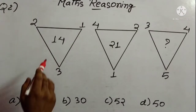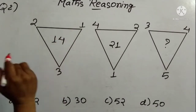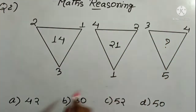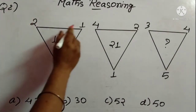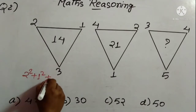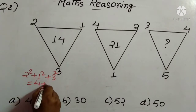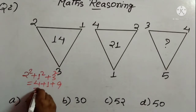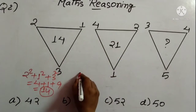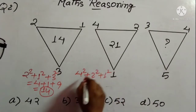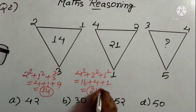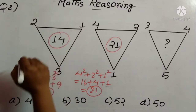Second question for today: three triangles are given. So we have 2, 1, 3 and the result is 14. Then 4, 2, 1 and the result is 21. Then 3, 4, 5 and we have to find the suitable number from the 4 options. See how we are getting 14 from this figure: this is 2² + 1² + 3² = 4 + 1 + 9 = 14. Check if the pattern holds: 4² + 2² + 1² = 16 + 4 + 1 = 21. Yes, we are getting 21 here also. So this is the pattern.